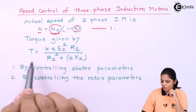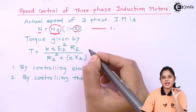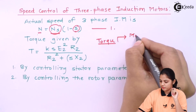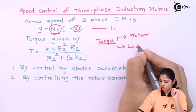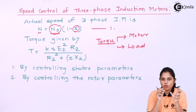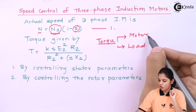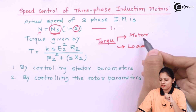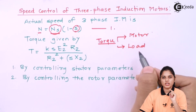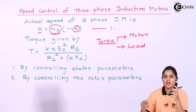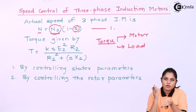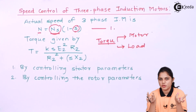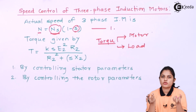The second point: torque is given by its formula, and the relation involves two parts — the motor and the load. If the torque of the motor is less than the torque of the load, the speed of the motor will decrease. But if the torque of the motor is greater than the torque of the load, the speed of the motor will increase. So by changing the load connected to the motor, you can vary the speed — whether you want to decrease or increase the speed of the motor.